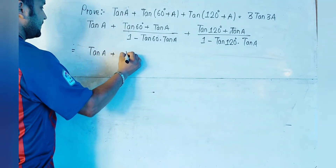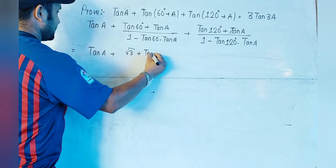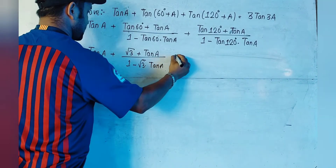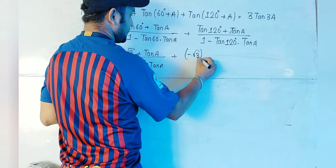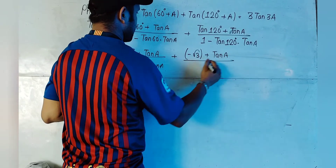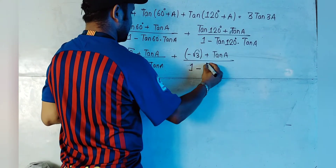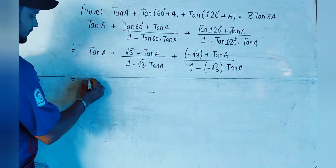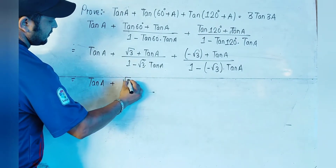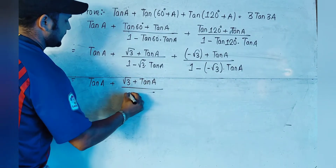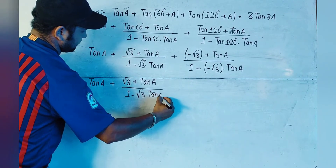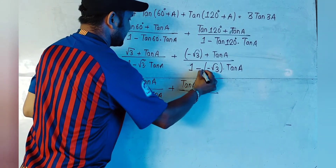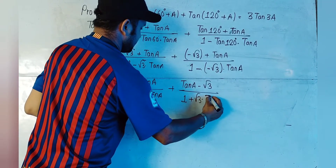Now we substitute the known values: tan(60°) = √3, so we put √3 in place of tan(60°). For tan(120°), the value is -√3, so we write -√3 in place of tan(120°). The denominator becomes 1 - (-√3)·tan a = 1 + √3·tan a. We can also rearrange to write (tan a - √3) / (1 + √3·tan a).